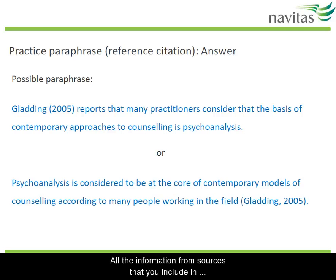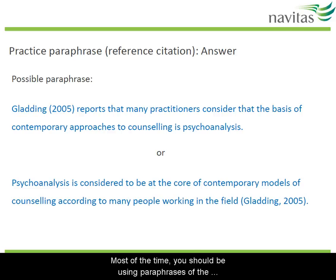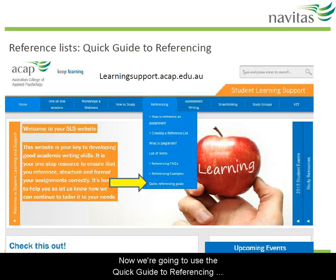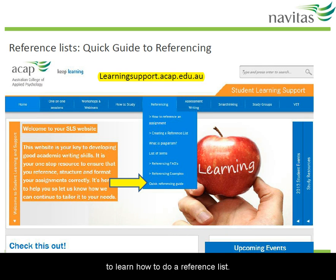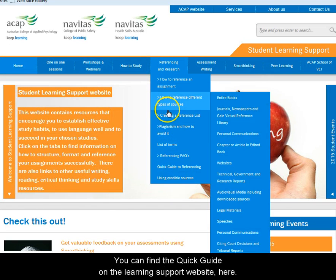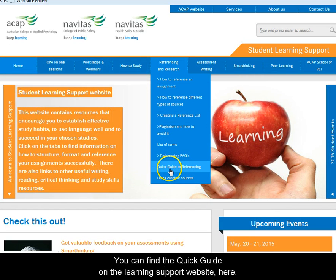All the information from sources that you include in your assignment should be referenced. Most of the time you should be using paraphrases of the information, with only a few quotes. Now we're going to use the Quick Guide to Referencing to learn how to do a reference list. You can find the Quick Guide on the Learning Support website here.